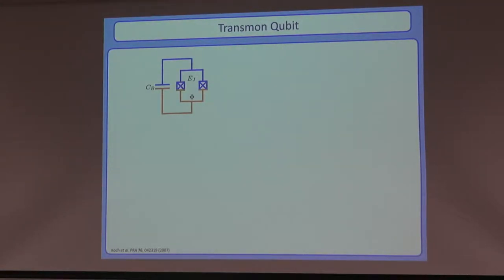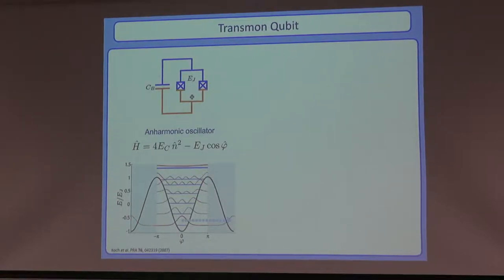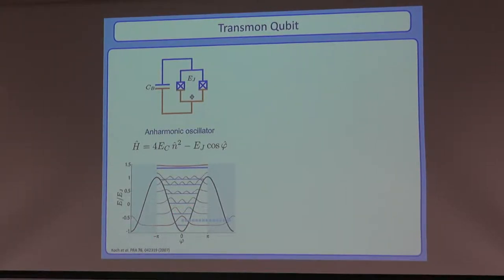For that we need something nonlinear or anharmonic, and the favorite at the moment is the transmon qubit — a capacitor in parallel with Josephson junctions. Its Hamiltonian is n-squared minus cosine-phi. Instead of phi-squared we have this cosine phi with higher-order corrections, making it nonlinear and anharmonic. In the transmon regime, EJ is much larger than EC, so we think of it as a particle in a cosinusoidal potential with bound states. Near the bottom it's almost parabolic, giving roughly harmonic oscillator-like behavior except that level spacing decreases at higher energies, allowing us to isolate the lowest two levels as an artificial two-level system.